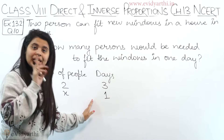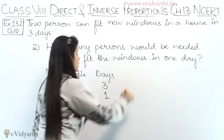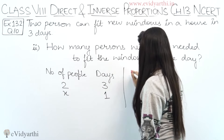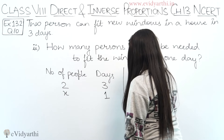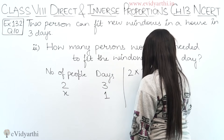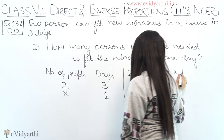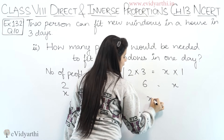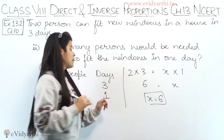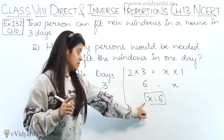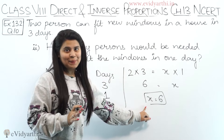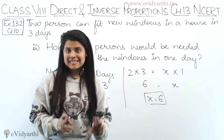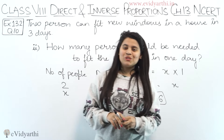Again this is an inverse proportion case. So we write: two into three equals x into one. x times one is x, and two times three is six. Again x equals six, meaning if we have to finish the work in one day, then six people are required. So this was question number 10.